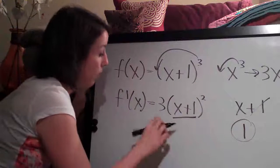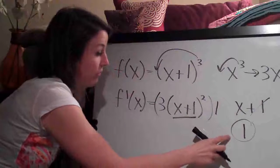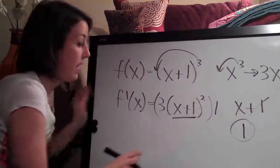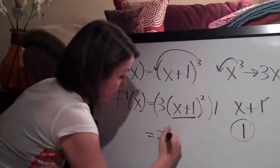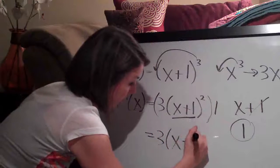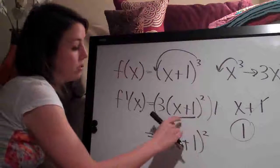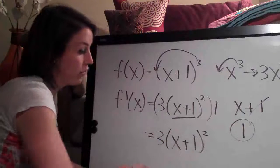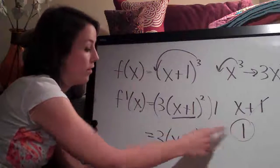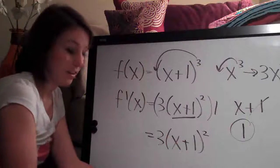So in this case, we would multiply this function by 1, the derivative of the inside here, and that would be our answer. So it actually ends up being the same thing, 3 times x plus 1 squared, and the chain rule doesn't have any effect on the final answer because it's just 1, the derivative of the inside is just 1 and it gets absorbed.